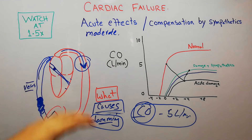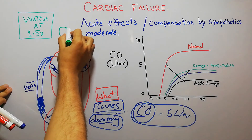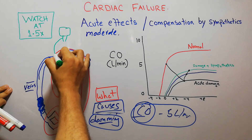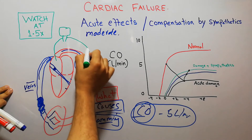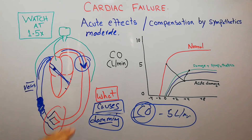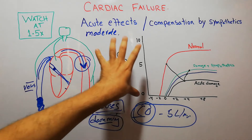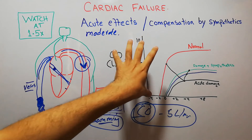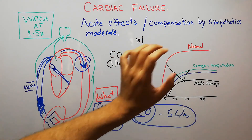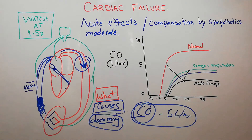To compensate, the sympathetic nervous system gets activated. Sympathetic nerves from the brain and spinal cord activate the heart and blood vessels — particularly arterioles and veins. We have plotted cardiac output on a graph to see what happens due to acute cardiac failure and how it is compensated.